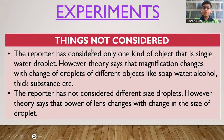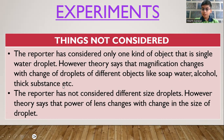In the experiments, the things which were not considered were that the reporter considered only one kind of object — a single water droplet. However, the theory says that magnification changes with the size of the droplet. She also did not consider droplets of different substances like soapy water, alcohol, or thick substances like glycerine. The reporter also did not consider different size droplets, though theory states that the power of the lens — that is, magnification — changes with droplet size.